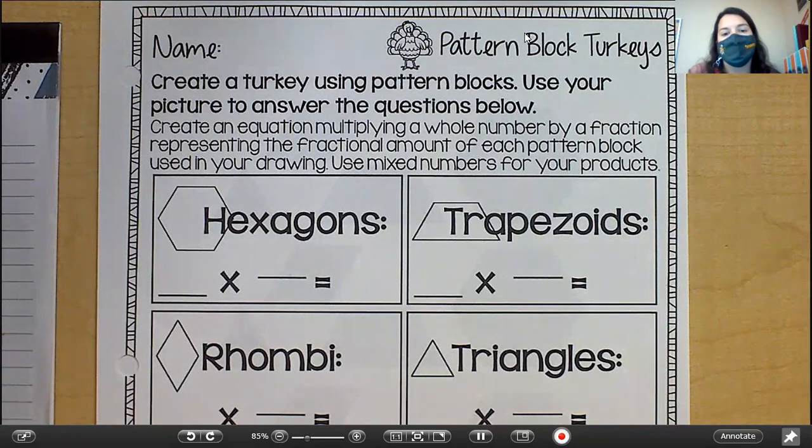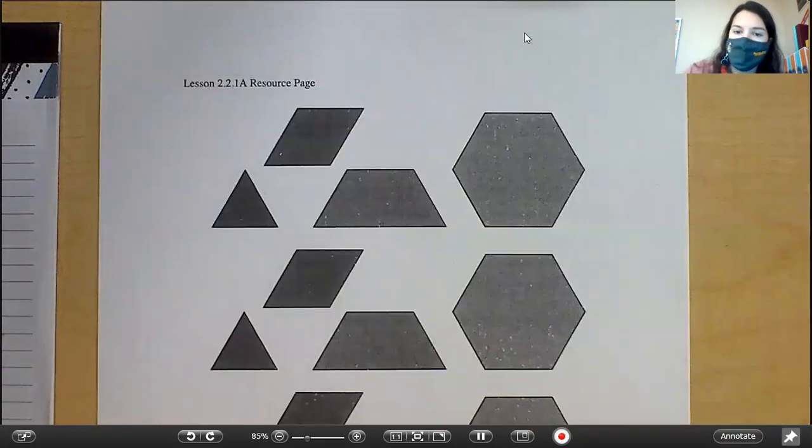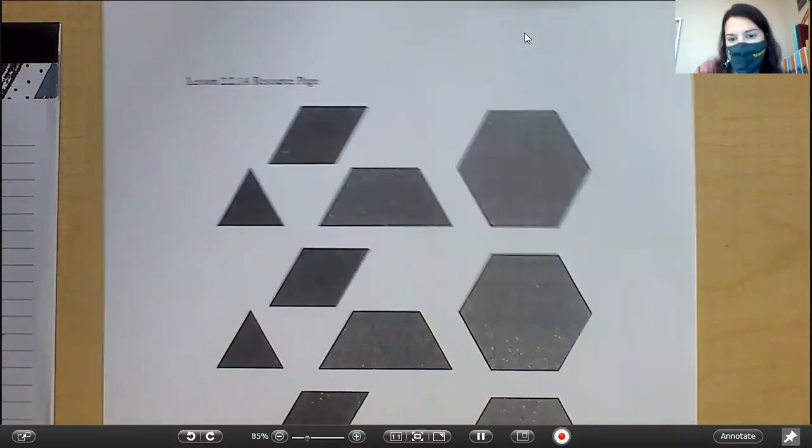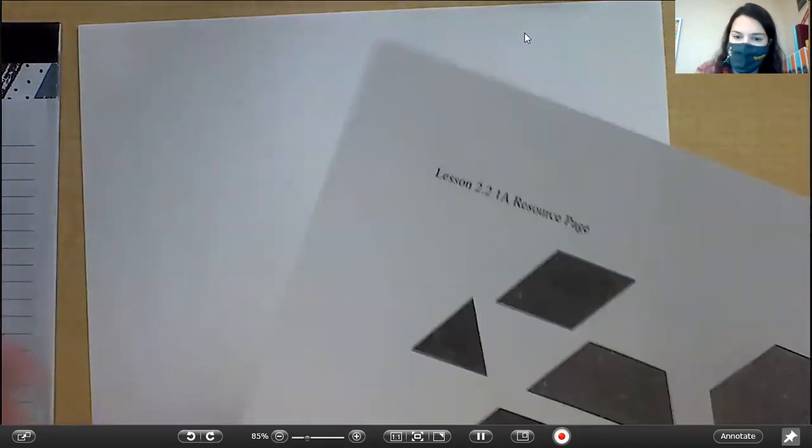Okay, so you're not going to answer these questions until after you make your pattern block turkey. So you're going to cut out your pattern blocks that I've given you, and then you're going to use those to design a turkey on your white sheet of paper. You can use them more than once because you are tracing them.